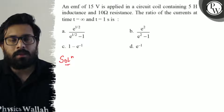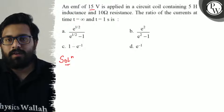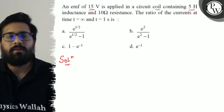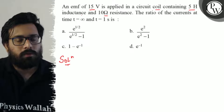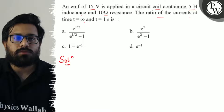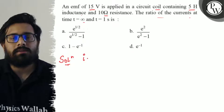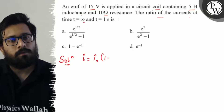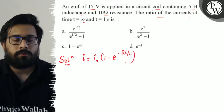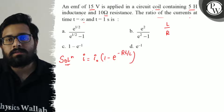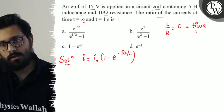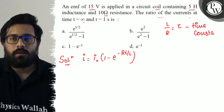So basically here you have an EMF of 15 volt applied in a circuit coil containing 5 Henry inductance and 10 ohm resistance. You have to calculate the ratio of the current at t equals to infinite and t equals to 1. We know that i equals i naught times (1 minus e raised to power minus Rt by L), where L by R is the time constant tau.